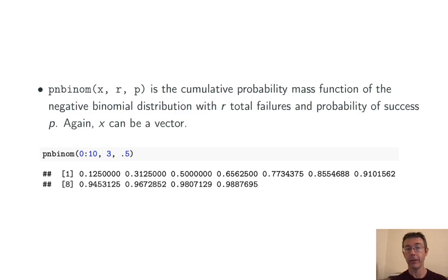So for instance, pnbinom(0:10, 3, 0.5) gives the probability of at most zero failures, at most one failure, at most two failures, etc., before getting the third success in a sequence of Bernoulli trials with probability of success 0.5 each time.